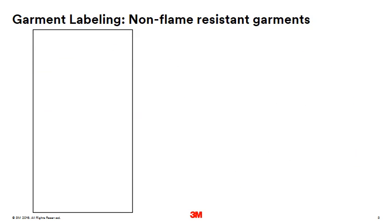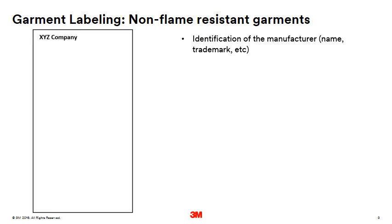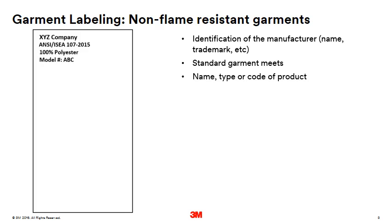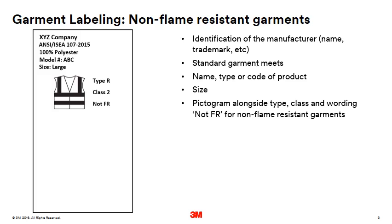Let's first take a look at an example of a non-flame resistant label. The items required by the ANSI 107-2015 standard are: name of manufacturer, trademark, or some other way to identify who made the garment; the standard the garment meets; the name, type, or code of the product; the size; and a pictogram that either depicts the garment or the universal pictogram shown here.